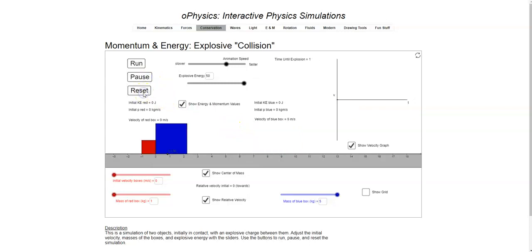So we pause this and reset it and just walk through some of the sliders. This is the animation speed, we don't need to deal with that. This is the explosive energy. If it's going a little too fast, we can take that explosive energy down so they don't explode apart so quickly. But we're going to leave it at 50 at the maximum because that's how we do physics, at the maximum. Here's a click box that can show you what the numbers are. This says what the velocity of the boxes are. They're at zero right now.